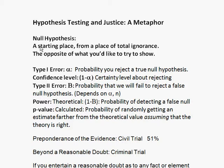A null hypothesis is something that's not interesting — just a state of ignorance. The most boring thing you can say sometimes is the way I think about it. A type 1 error, alpha, is the probability you will reject a true null hypothesis. 1 minus alpha we call the confidence level, and that is how confident or certain you should feel if you reject a null hypothesis — how confident are you that you've done the right thing.